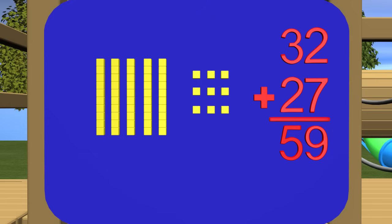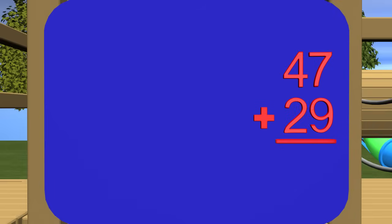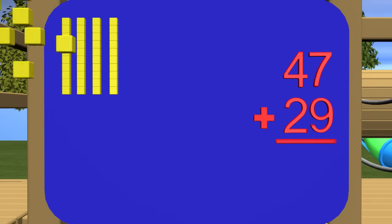Now let's look at a different problem. In this problem, we have 47 plus 29. Let's represent these numbers using our base 10 blocks. To get 47, how many tens blocks do we need? How many ones blocks do we need? If you said 4 tens and 7 ones, you are correct. We need 4 tens blocks and 7 ones blocks.